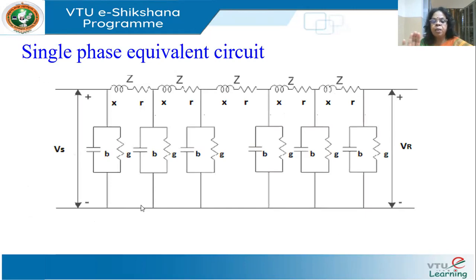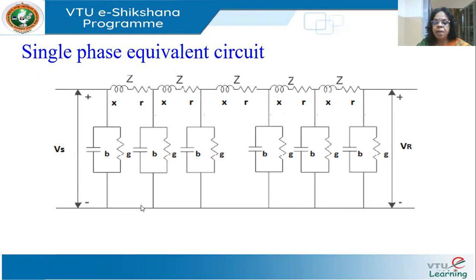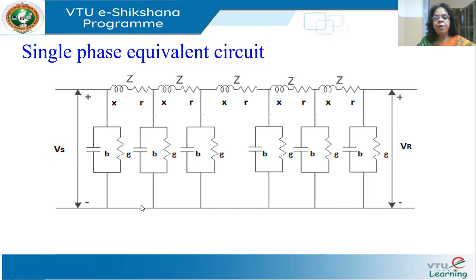This is how the distributed network would look like. There is some lumping, but it gives you an idea. Each section represents one kilometer. R and X are the parameters per unit kilometer, and G and B are the shunt conductance and shunt susceptance per unit length — that is, per kilometer. You have the receiving end voltage and the sending end voltage.